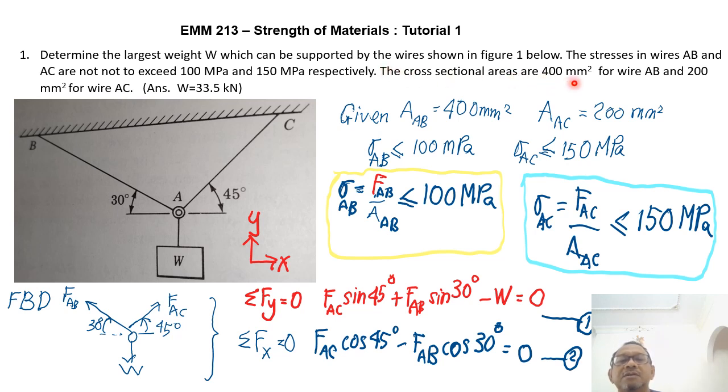The cross-sectional areas are 400 mm square for wire AB and 200 mm square for wire AC. Wire AC is smaller at 200 mm square. So how do we approach this? So I first label my directions, Y and X, Y vertical, X horizontal so that whenever I write the equation for force equilibrium and moment equilibrium, I know my directions of positive force.